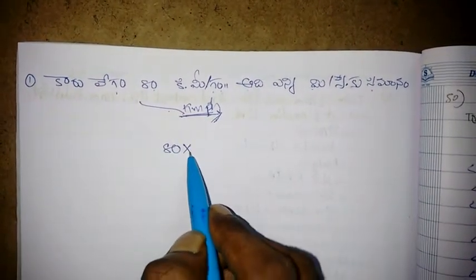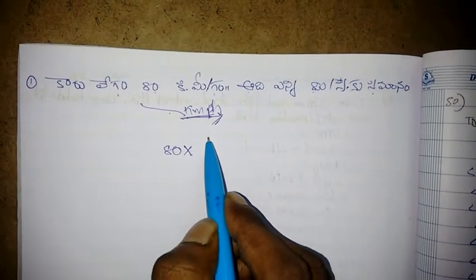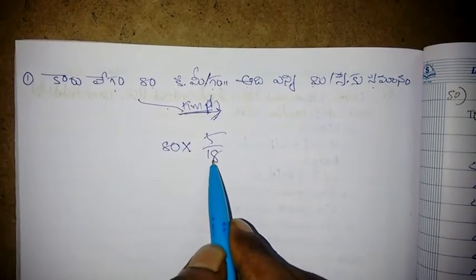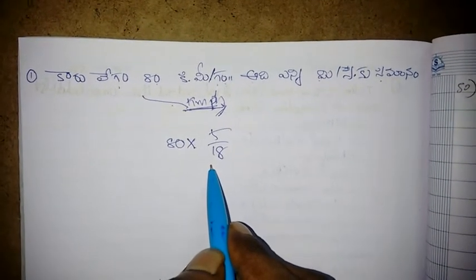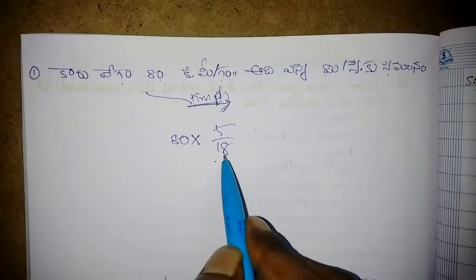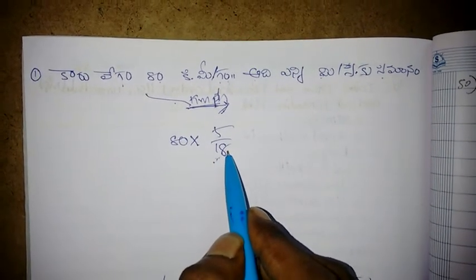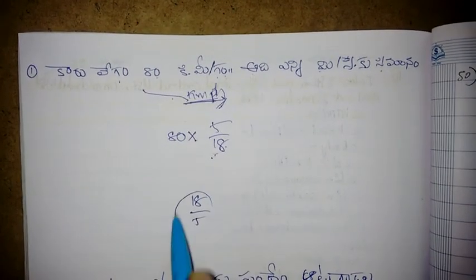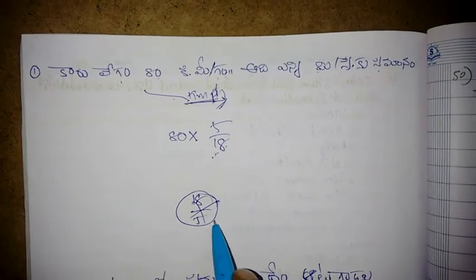80 — this is 80 m per second. This is 5 by 80. This is the formula. This is 18 by 5. This is the formula.